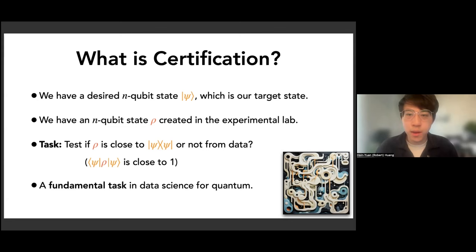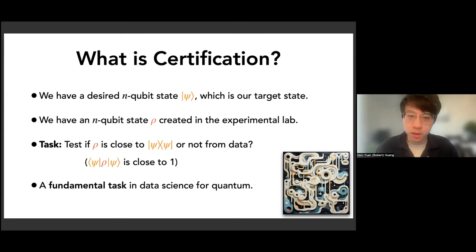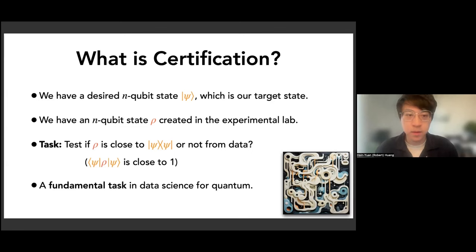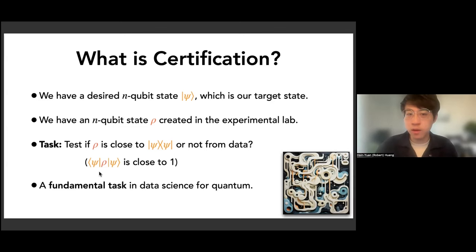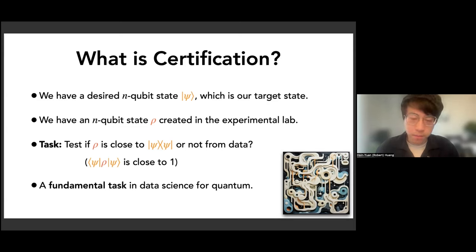The task of certification is the following: we have a desired quantum state ψ, which is our target state that we hope to create in the lab. We think of ψ as having some very complicated entanglement structure. In practice, we won't be able to prepare ψ perfectly — we'll prepare some mixed state ρ due to imperfections in the experimental system. The task of certification is to test if ρ is close to ψ by analyzing data from quantum experiments, particularly by checking if the fidelity ⟨ψ|ρ|ψ⟩ is close to one.